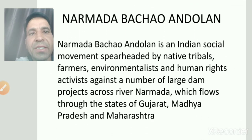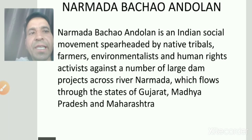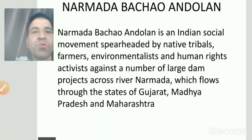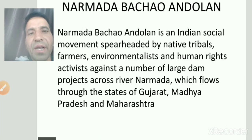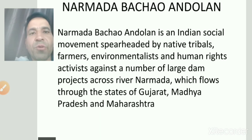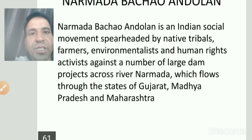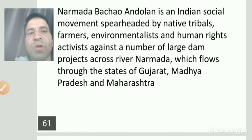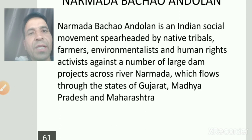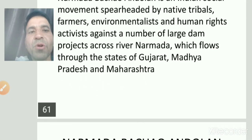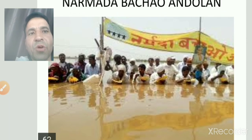Next हम Narmada Bachao Andolan के बारे में discuss करेंगे। यह आंदोलन इसलिए चला था क्योंकि environment को नुकसान होगा और जो लोग यहाँ dependent थे उन्हें ज़्यादा नुकसान होगा। Generally question पूछा जाता है कि Narmada river किन-किन states से गुज़रती है — चार states याद रखें: Rajasthan, Gujarat, Madhya Pradesh, और Maharashtra।